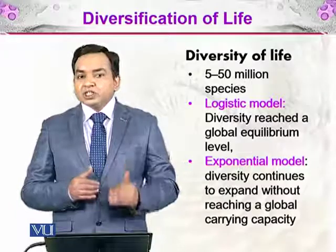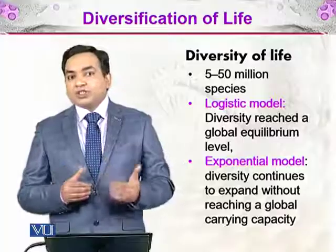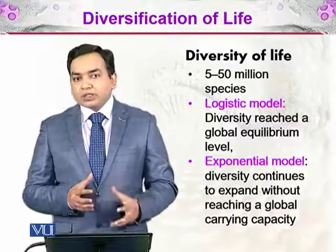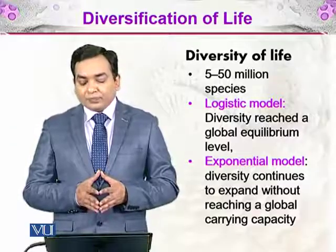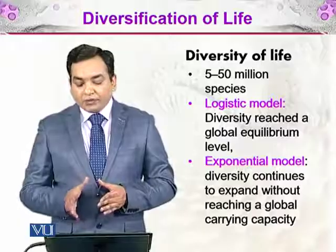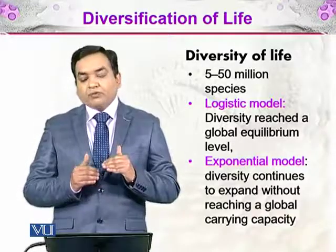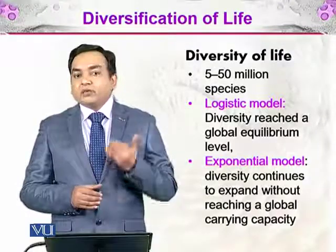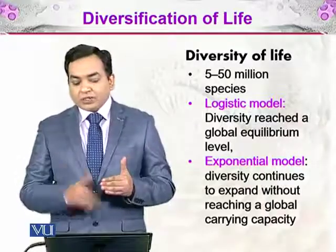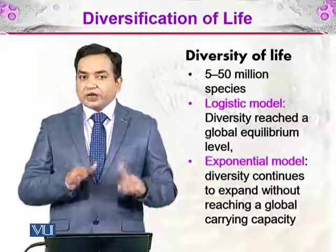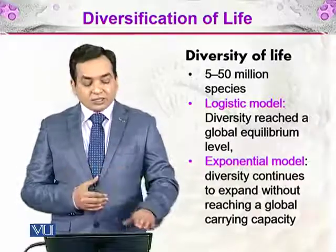In the logistic model, species were growing and growing until they became equilibrium with the logistical resources of the environment. The second is the exponential model, which says that diversity continues to expand without reaching a global carrying capacity — the diversity is increasing without any hampering from the environment. The logistic model says that species and environment are in equilibrium, and we will be further developing these ideas.